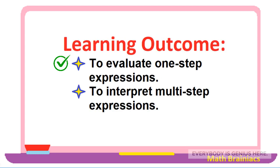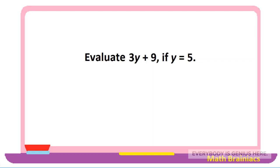We have learned how to evaluate one-step expressions. Now let us study how to interpret multi-step expressions. Evaluate 3y plus 9 if y is equal to 5. We substitute the value of y, which gives us 3 times 5 plus 9. Three times 5 is 15, and adding 9 gives us 24. Therefore, 3y plus 9 is equal to 24 if y is equal to 5.